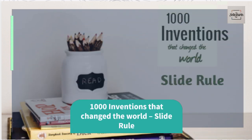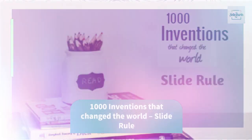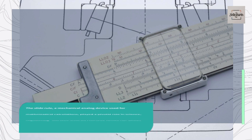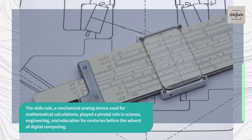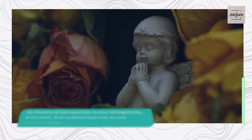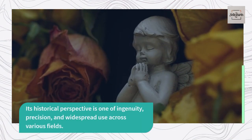1000 Inventions That Changed the World: Slide Rule. The slide rule, a mechanical analog device used for mathematical calculations, played a pivotal role in science, engineering, and education for centuries before the advent of digital computing. Its historical perspective is one of ingenuity, precision, and widespread use across various fields.